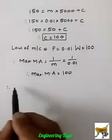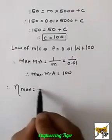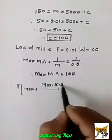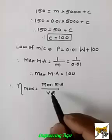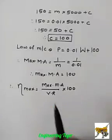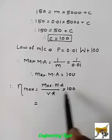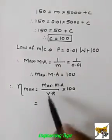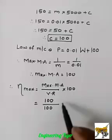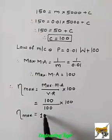Now we have to calculate maximum efficiency in percentage. It is calculated by the ratio of maximum MA upon VR times 100. Maximum MA is 100, velocity ratio is 100, so maximum efficiency equals 100 upon 100 times 100, which is 100 percent.